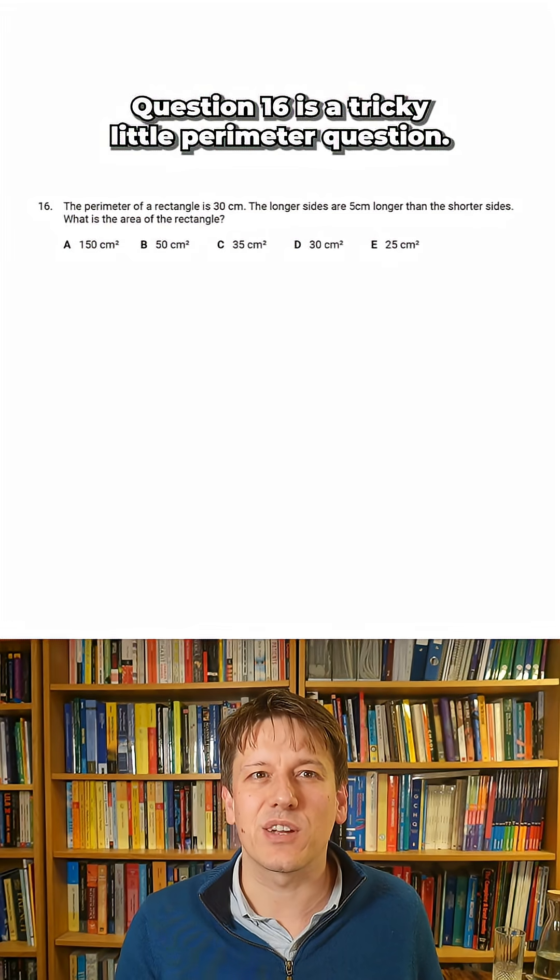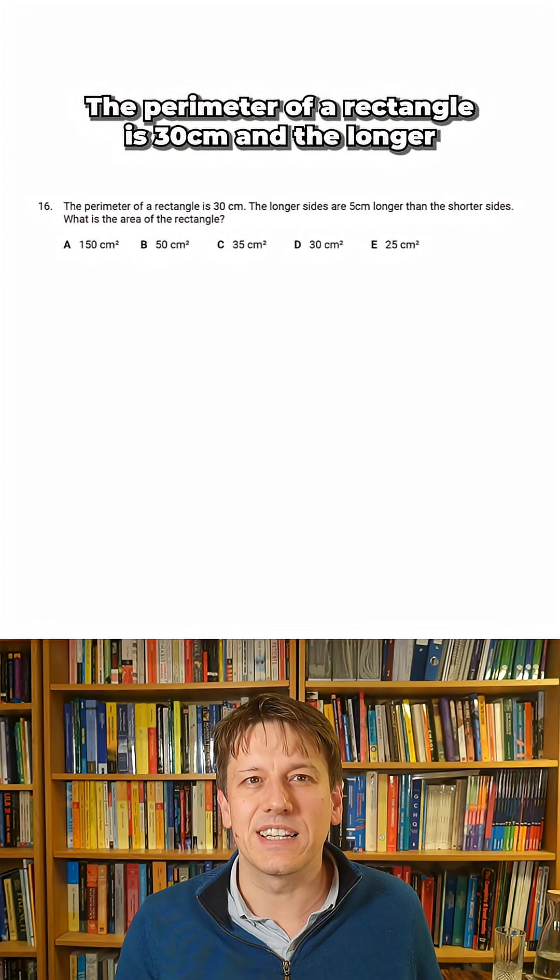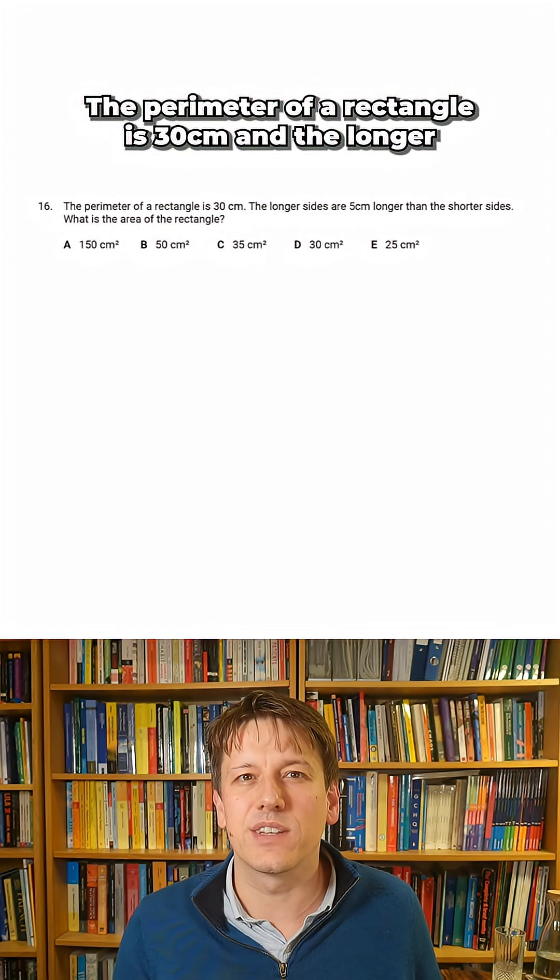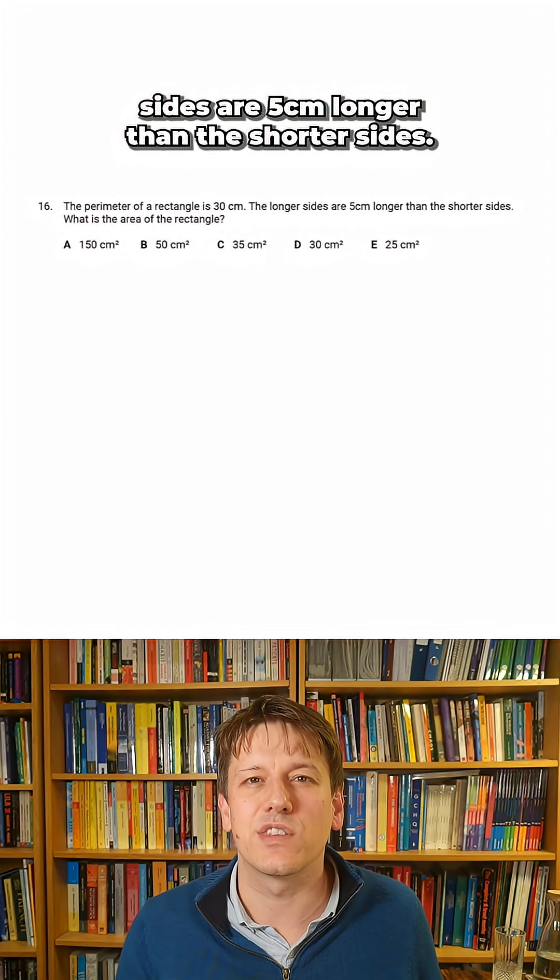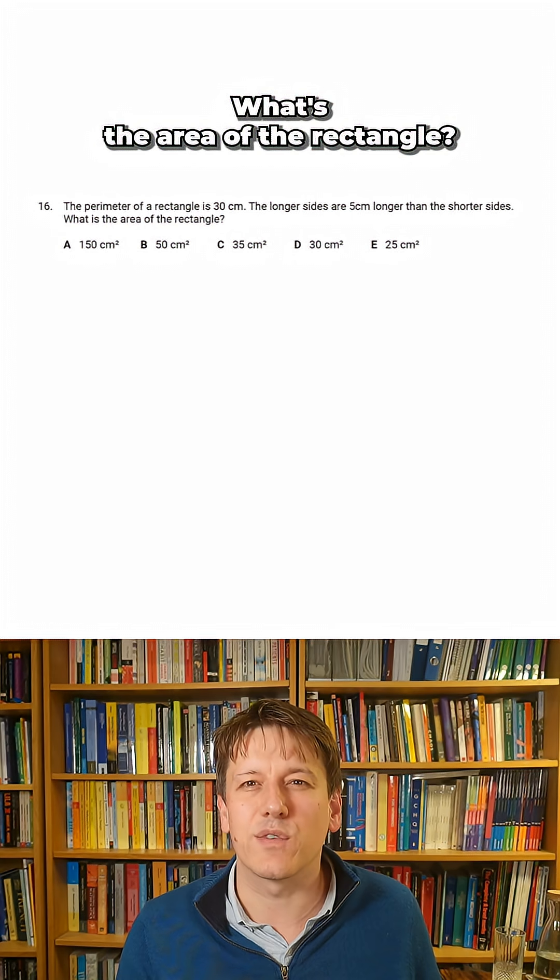Question 16 is a tricky little perimeter question. The perimeter of a rectangle is 30 centimeters and the longer sides are five centimeters longer than the shorter sides. What's the area of the rectangle?